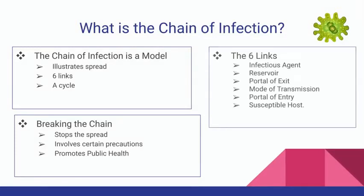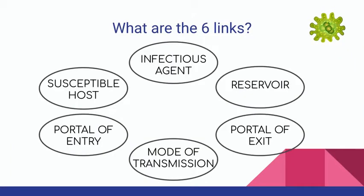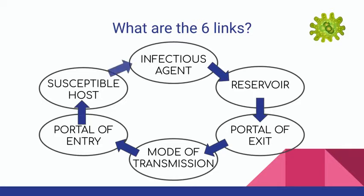The six links to the chain include the infectious agent, reservoir, portal of exit, mode of transmission, portal of entry, and susceptible host. These are diagrammed here. The chain spreads in a clockwise fashion, with the first component being the infectious agent, which then spreads to the reservoir, then the portal of exit, and so on to the susceptible host. If the chain isn't broken, the cycle will continue to repeat itself.